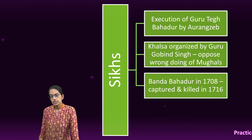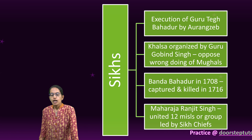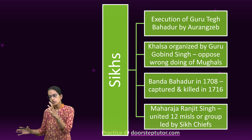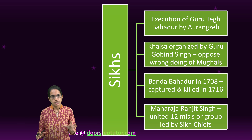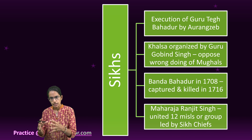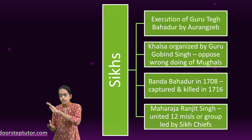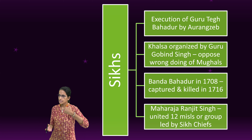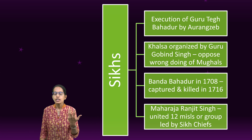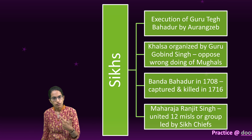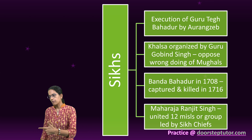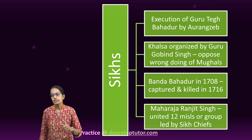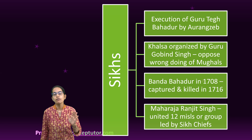After that, the works of Maharaja Ranjit Singh have been very important. Under Maharaja Ranjit Singh, 12 misls or groups led by chiefs were united. The whole area west of the Sutlej River was established as an independent Sikh territory. This was under the Treaty of Amritsar, signed with Lord Minto, also known as the Treaty of Perpetual Friendship.